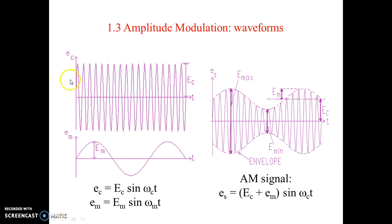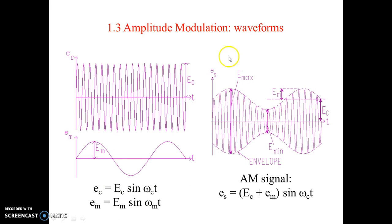These are the waveforms of the AM signal. The high frequency signal has amplitude E_C and the low frequency signal has amplitude E_M. Here, lowercase e_c is the instantaneous amplitude and capital E_C is the constant value of the carrier signal. The amplitude of the carrier signal remains constant, while the amplitude of the message signal is continuously changing. The carrier and message signals are fed into a block called a modulator, and we see a two-dimensional representation of the resulting modulation.